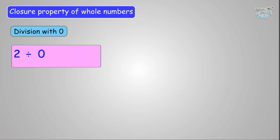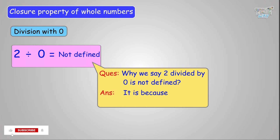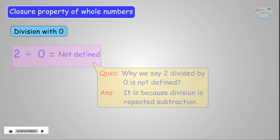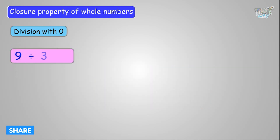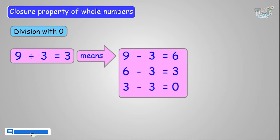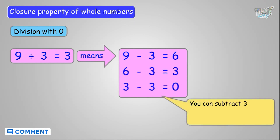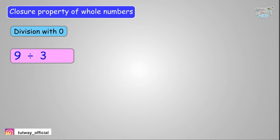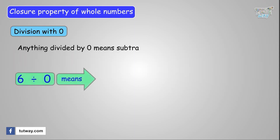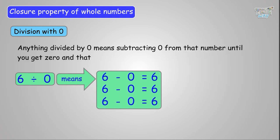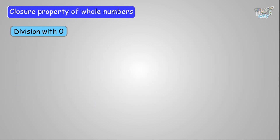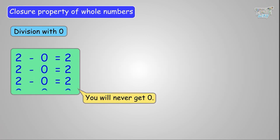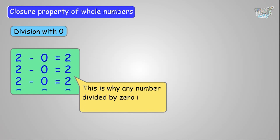What is 2 divided by 0? We say it is not defined. Why? Because division is repeated subtraction. For example, 9 divided by 3 means we repeatedly subtract 3 from 9 until we get 0 — that's why the answer is 3. But dividing by 0 means subtracting 0 from a number until you get 0, which is not possible — you can subtract 0 any number of times and never reach 0. This is why any number divided by 0 is undefined.